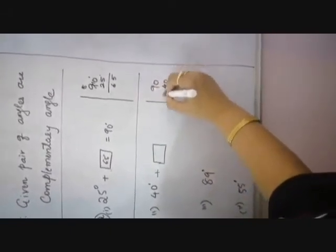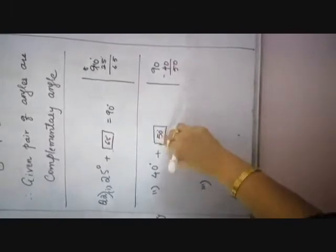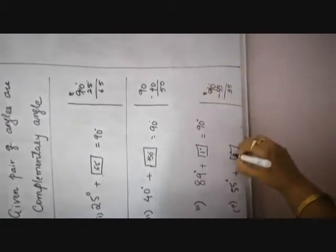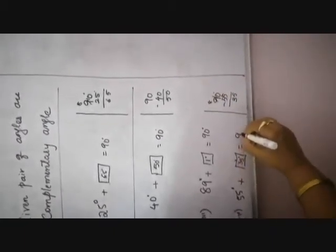Next, 89 degrees is given. 89 plus what number equals 90 degrees? Simple: 1 degree. Then, 90 minus 55 degrees — borrow it: 10 minus 5 is 5, 8 minus 5 is 3. So 35 degrees, and 55 plus 35 is equal to 90 degrees. Complementary means the sum of two angles must be equal to 90 degrees — remember only this one point.